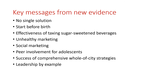To sum up the key messages from the new evidence: there is no single solution. Prevention efforts need to start before birth. Taxing sugar-sweetened beverages is an effective method. Unhealthy marketing needs to be restricted. Mass media and social marketing must not be undertaken in isolation, but rather linked to products, programmes and services. With adolescents, peer involvement and feedback is essential. Some cities have been successful with a comprehensive approach, and at sub-national level, some governments have been able to lead by example.